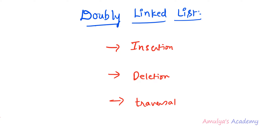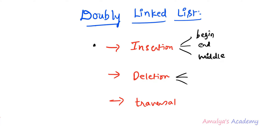In the insertion operation, we will add a new node to the doubly linked list. We can perform this in different positions: at the beginning of the linked list, at the end, or in the middle. In the deletion operation, we can delete a node from the beginning, end, or middle, or by specifying the value of the node we want to delete.